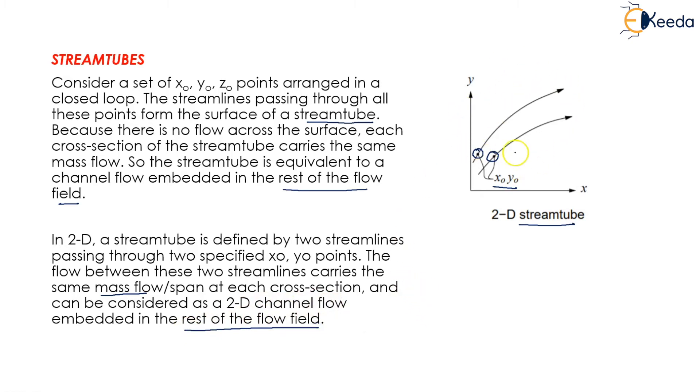This is my field through which these streamlines are passing. In this three-dimensional stream tube, we have all three components: x naught, y naught, and z naught. These are the points through which my streamline is passing.